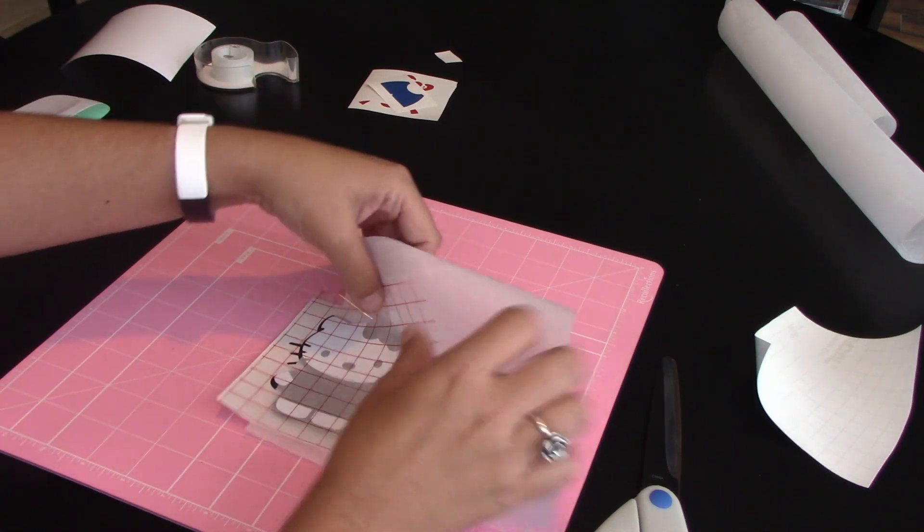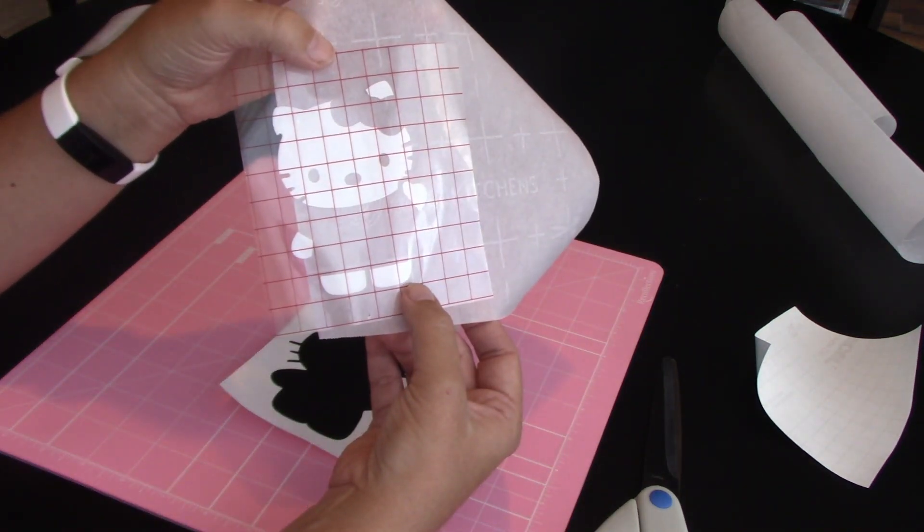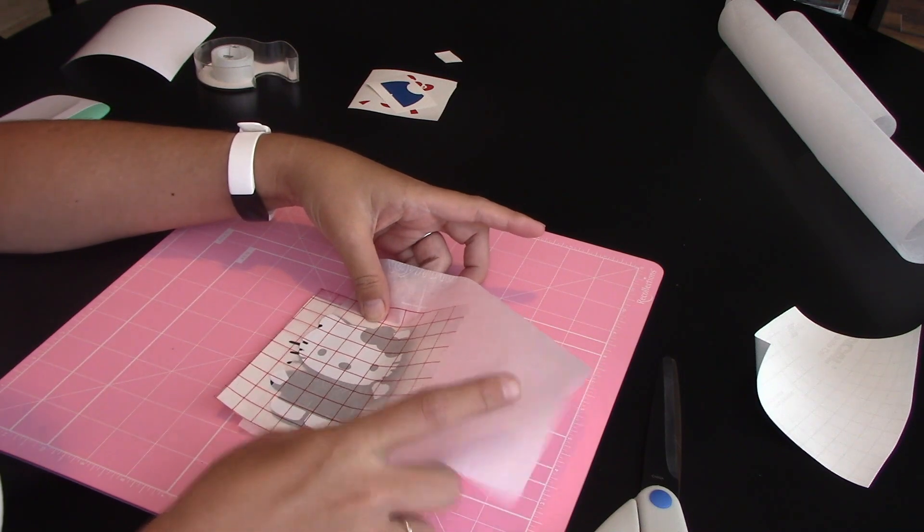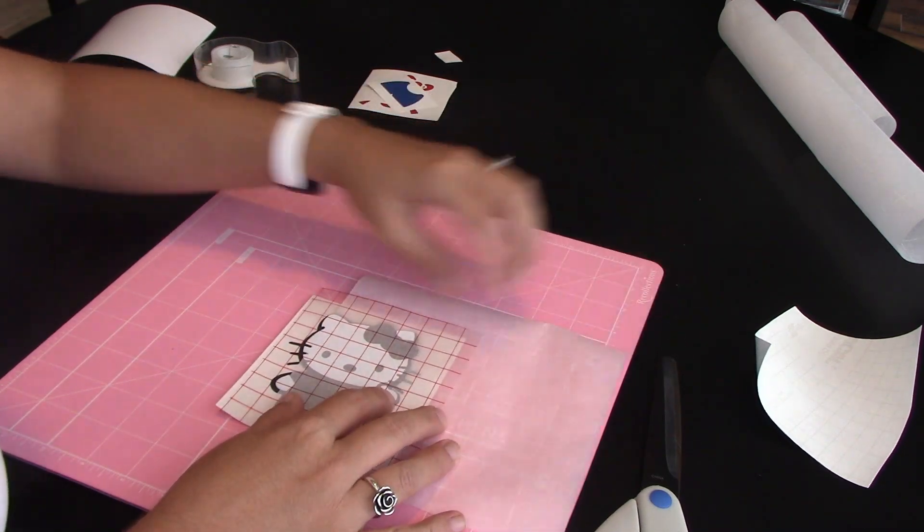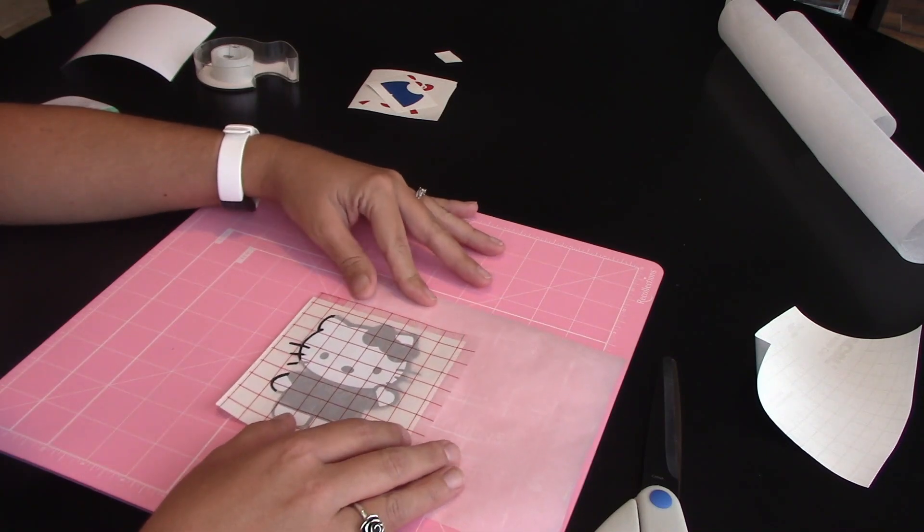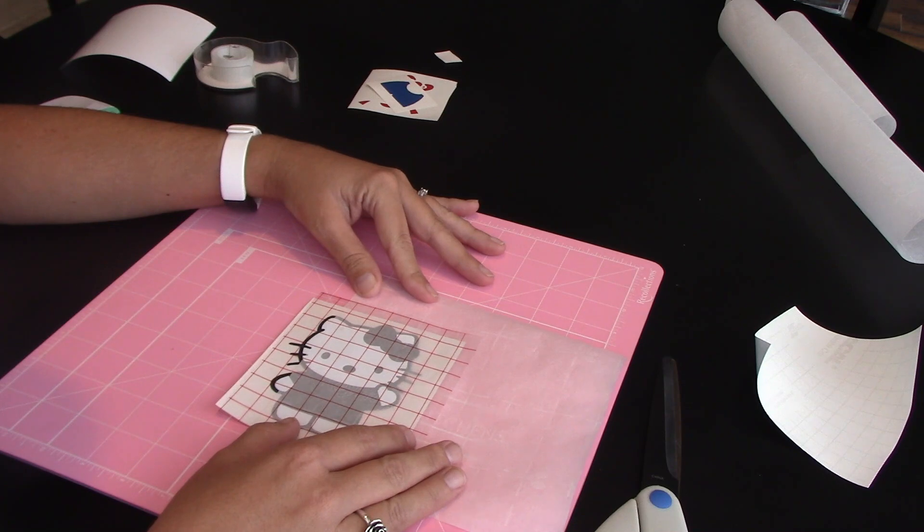So you see Hello Kitty is stuck to the parchment paper. Now I can look through the parchment paper and make sure that I've got this design just exactly where I want it. See how I can just move it all around. I can line it up perfectly. Make sure it is where I want it to be.